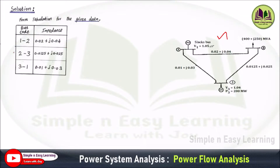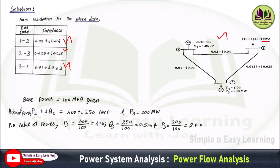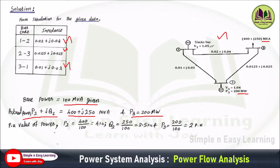From the given diagram, we make the bus data tabular column. Bus 1 to 2, bus 2 to 3, and bus 3 to 1 — all impedance values are specified in per unit. The power ratings are given in MVA and megawatt, so we convert these power ratings into per unit quantities. With a 100 MVA base, per unit equals actual value divided by base value. P2 plus JQ2 is 400 plus J250 MVA. So P2 equals 400/100 = 4 per unit, Q2 equals 250/100 = 2.5 per unit, and P3 equals 200/100 = 2 per unit. In the further steps, we use the per unit values only.